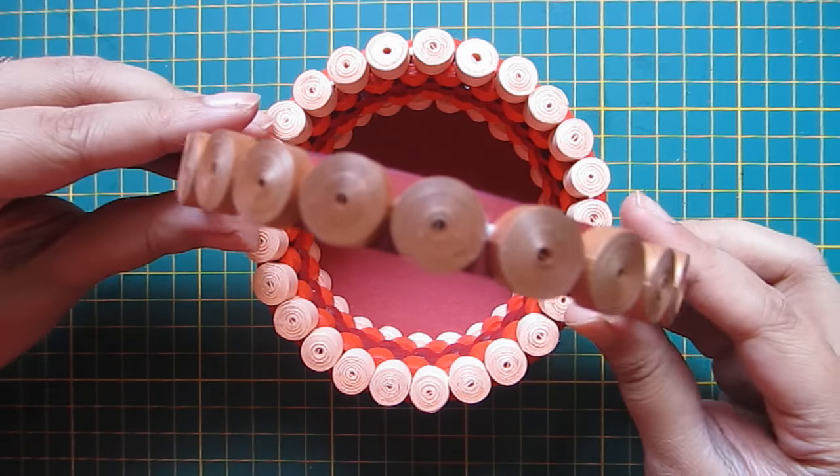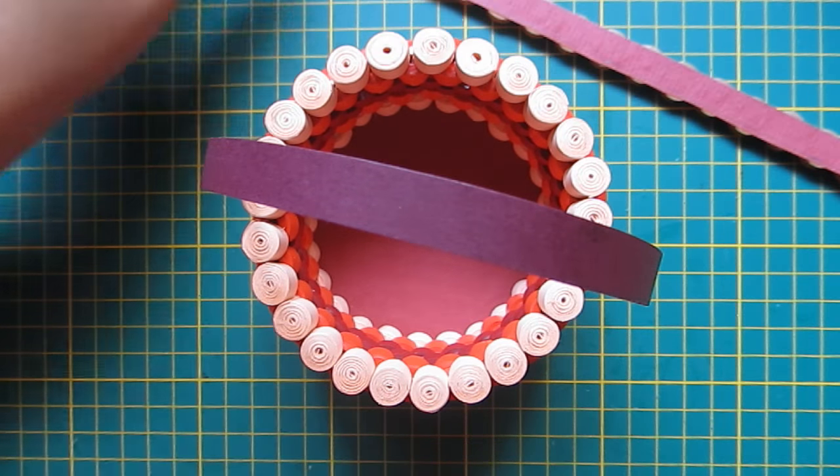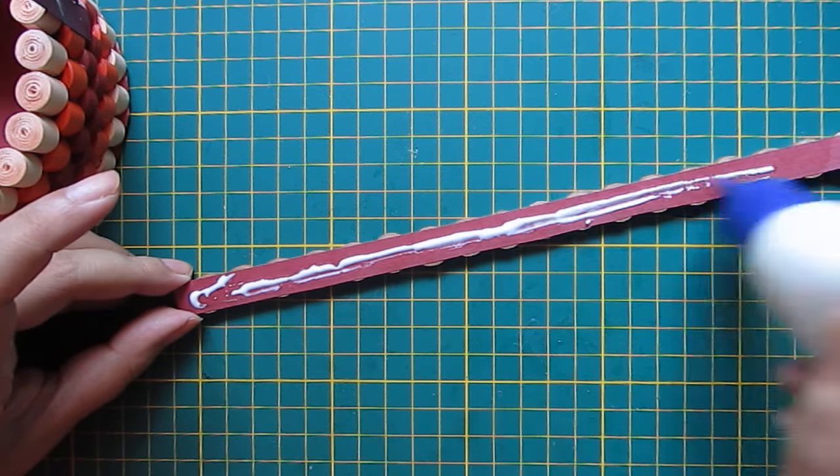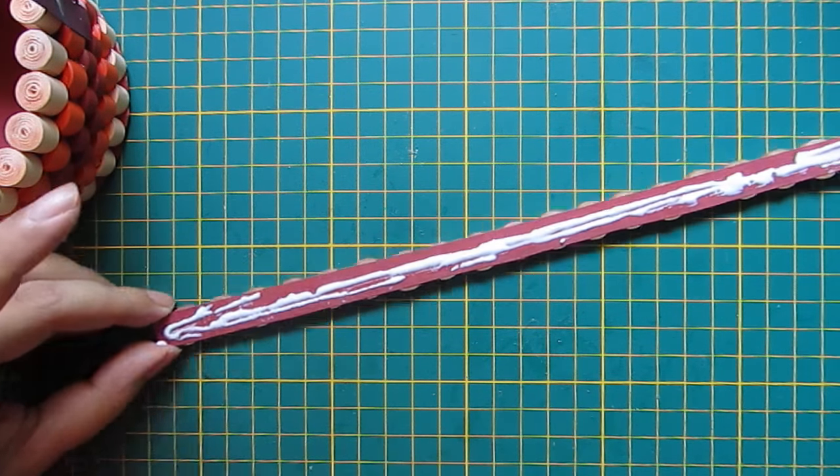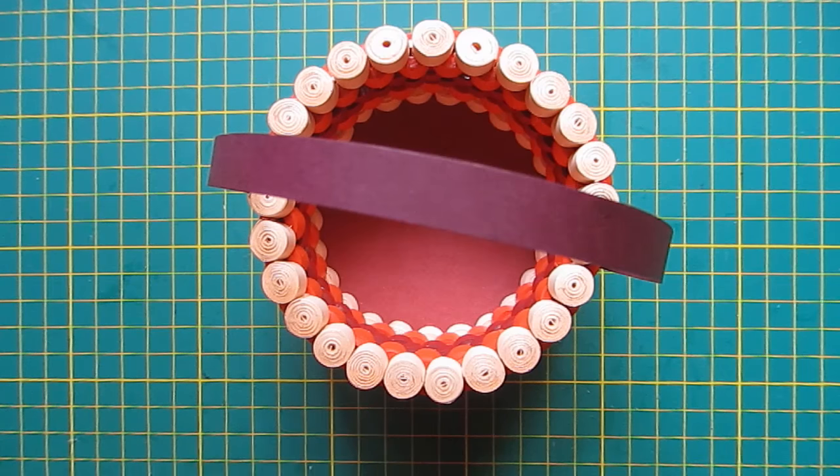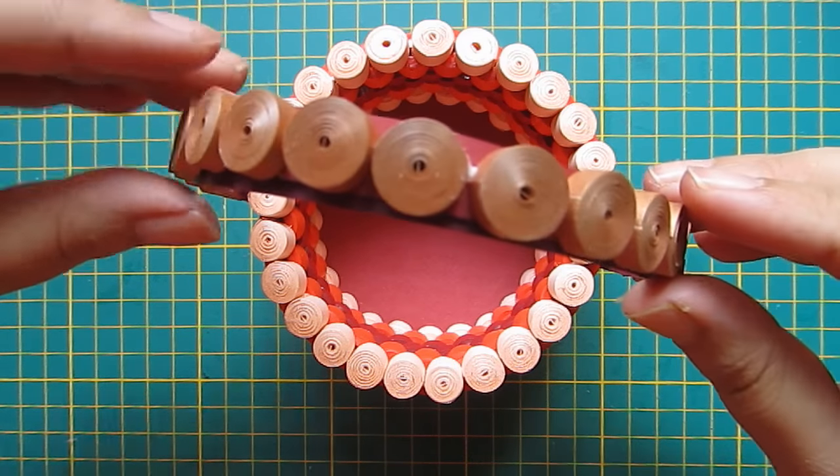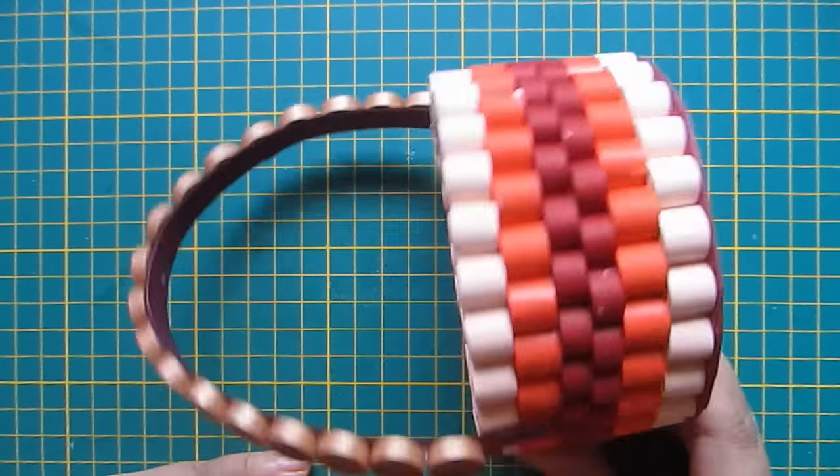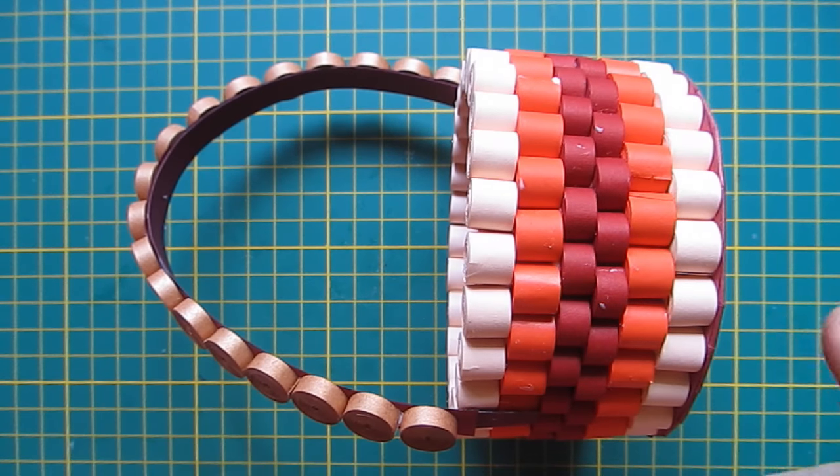Now I will attach this coil strip on that cardboard handle. So add glue and add this strip on the handle. So my basic shape is done.